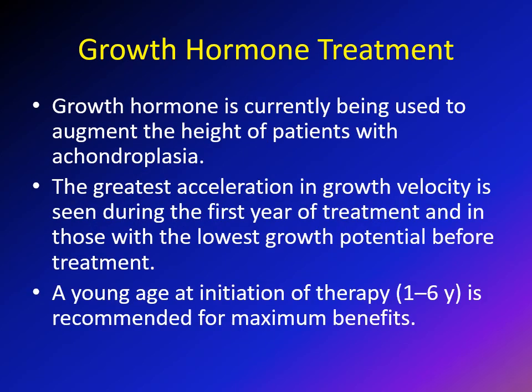Growth hormone (somatotropin) can be used to augment height in patients with achondroplasia. The greatest acceleration in growth is usually seen during the first year of treatment and in those with the lowest growth potential before treatment. Young age at initiation — ideally less than six years — is recommended for maximum benefit. However, results of growth hormone treatment for achondroplasia have been controversial, with conflicting results from different studies.